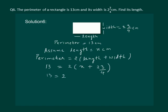We get 11 by 4 in the equation. Solving further, we get 13 is equal to 2x plus 22 by 4. We open the bracket by multiplying 2 with x and 2 with 11 by 4.